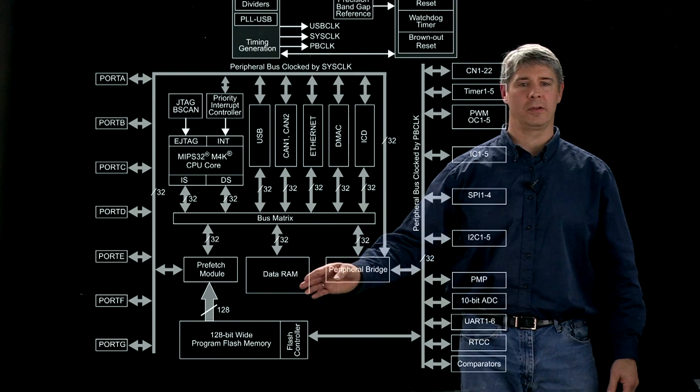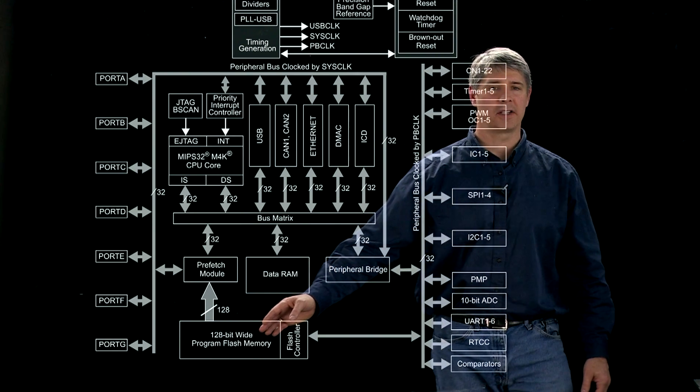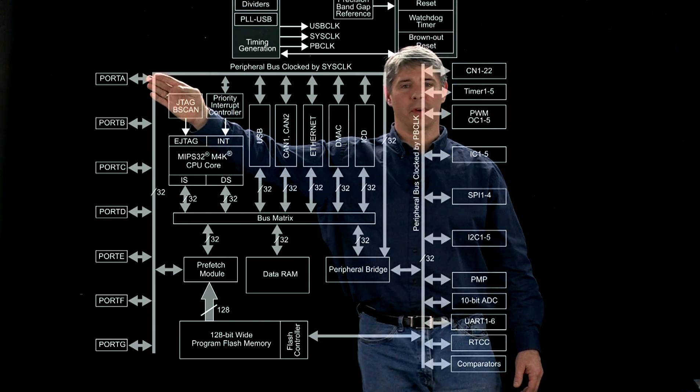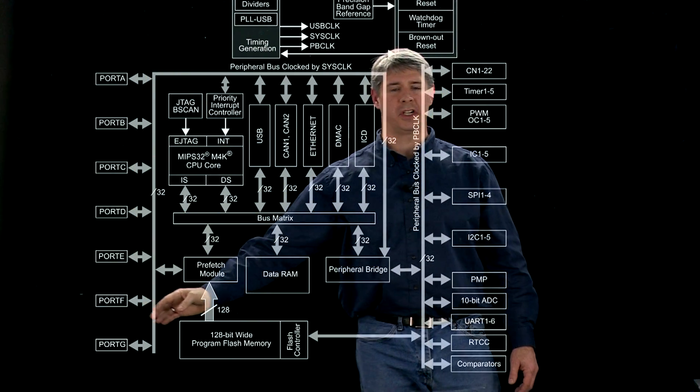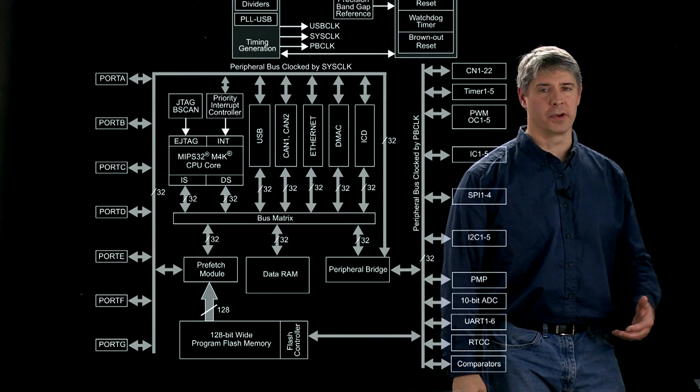So that's the CPU, data RAM, and program flash. You can see over here these ports, port A down to port G. Those are our digital input and output ports.